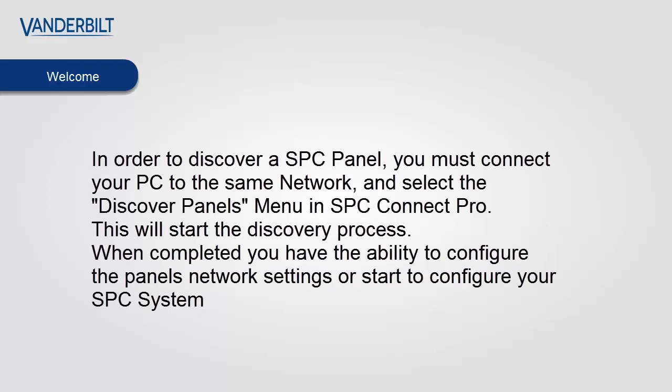In order to find an SPC panel, connect your PC to the same network as the panel and select the discovery option in SPC Connect Pro. This will start the discovery process. When completed, you can configure the network settings or start to configure your SPC system.